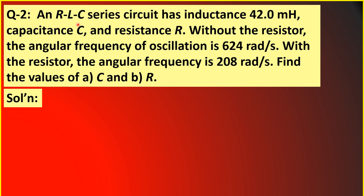Question number 2. An RLC series circuit has inductance 42.0 mH. The capacitance C and resistance R are not given — these are our target variables. Without the resistor, the angular frequency of oscillation is 624 radians per second. With the resistor, the angular frequency is 208 radians per second. Find the values of letter A, the capacitance, and letter B, the resistance.